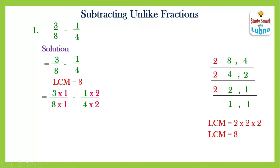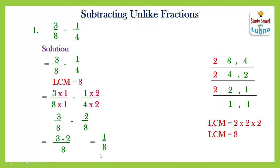Multiplying the numbers: three times one is three, and eight times one is eight. Then minus: one times two equals two, and four times two equals eight. Now both denominators are equal to the LCM, eight, so they have converted into like fractions. We subtract the numerators and write eight as the common denominator: three minus two upon eight. Three minus two equals one, so the answer is one upon eight. In this way we can subtract two unlike fractions.